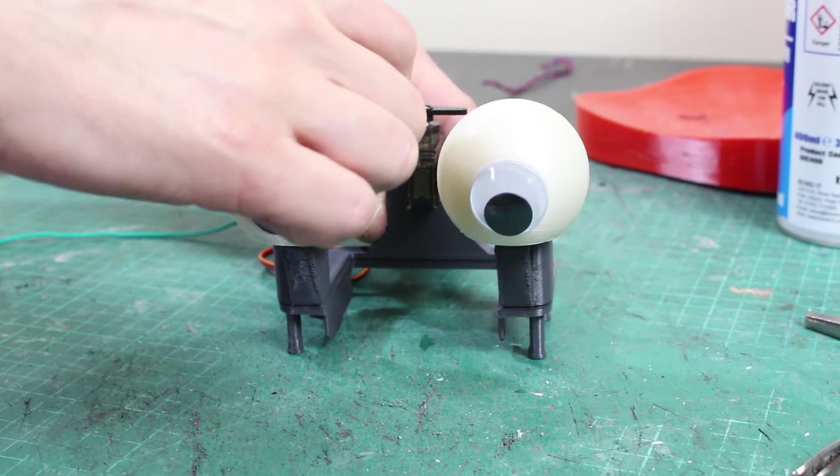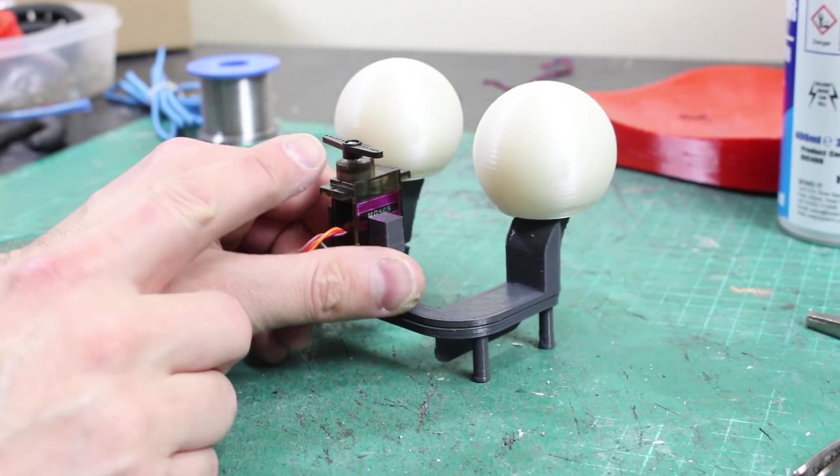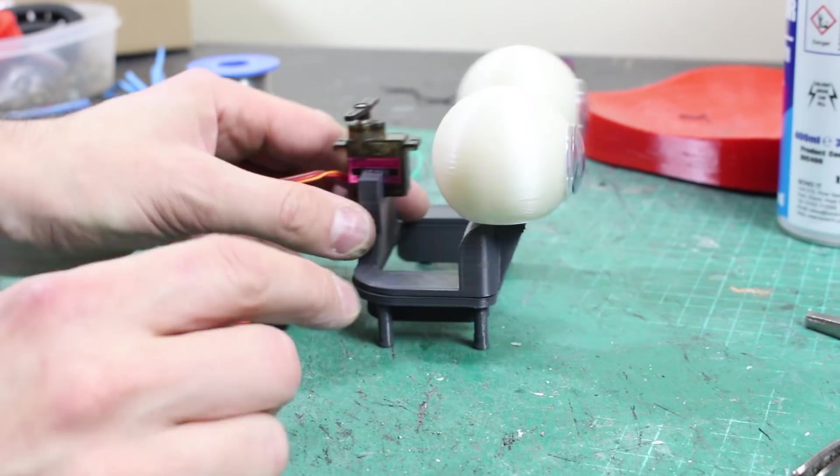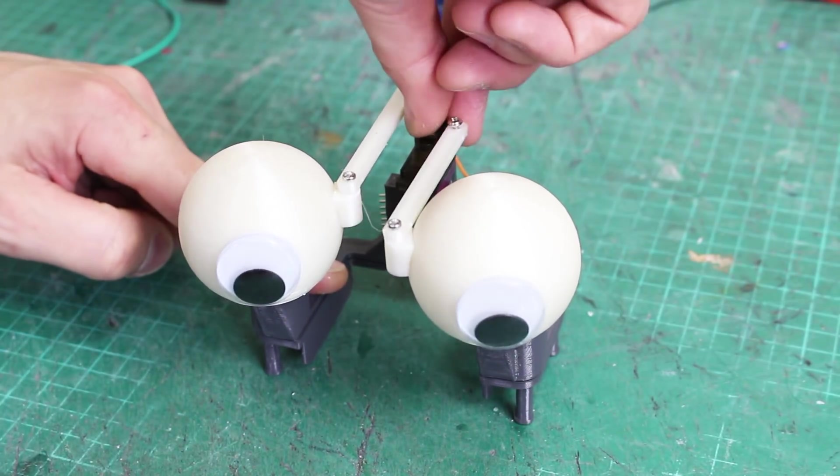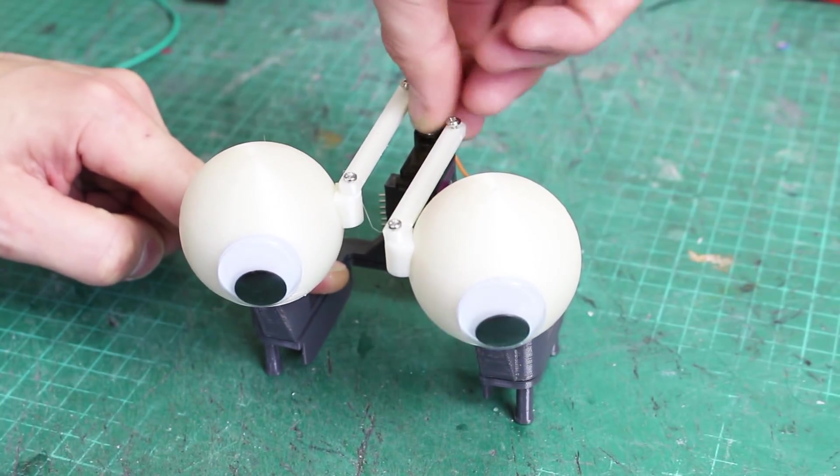So there are my eyes mounted. They can swivel this way and then there's a servo at the back which is going to move them. And this is the same mounting as the Hexa body shell. So I've now attached two levers, which means when the servo turns, it moves the eyes and they look left and right.